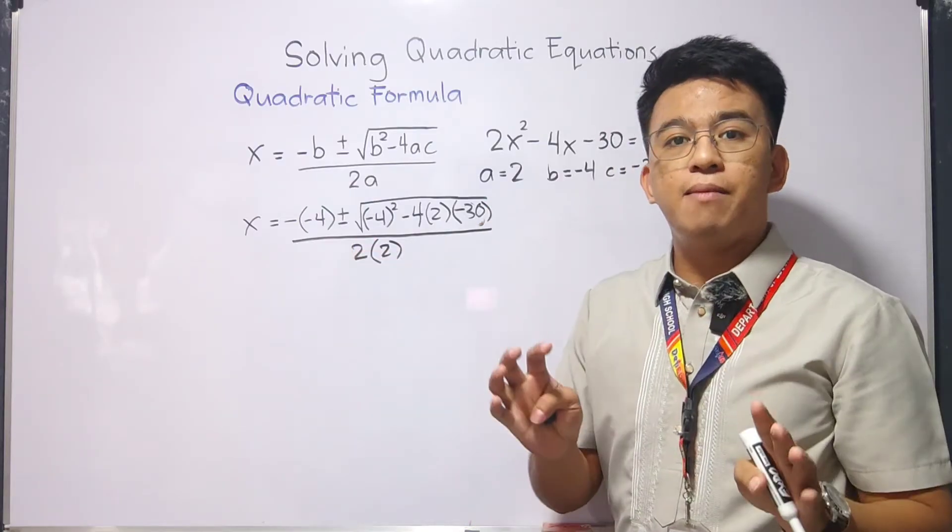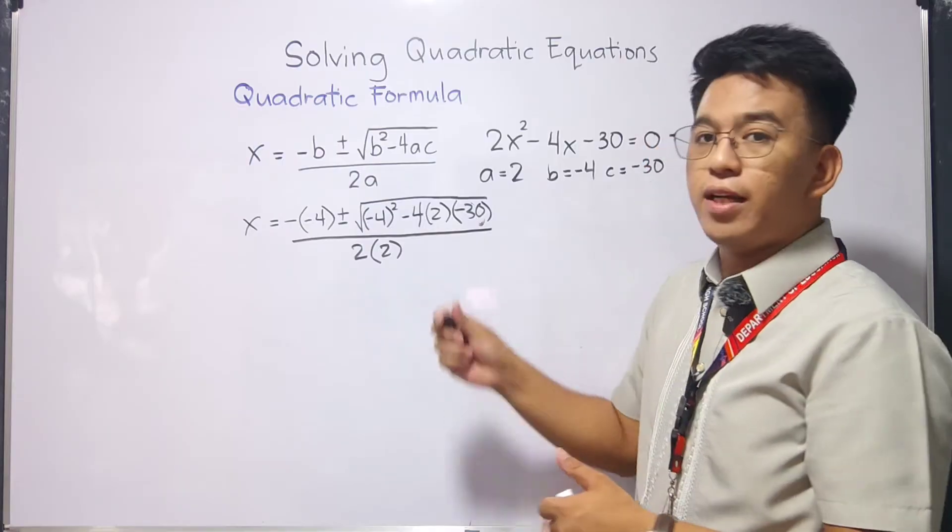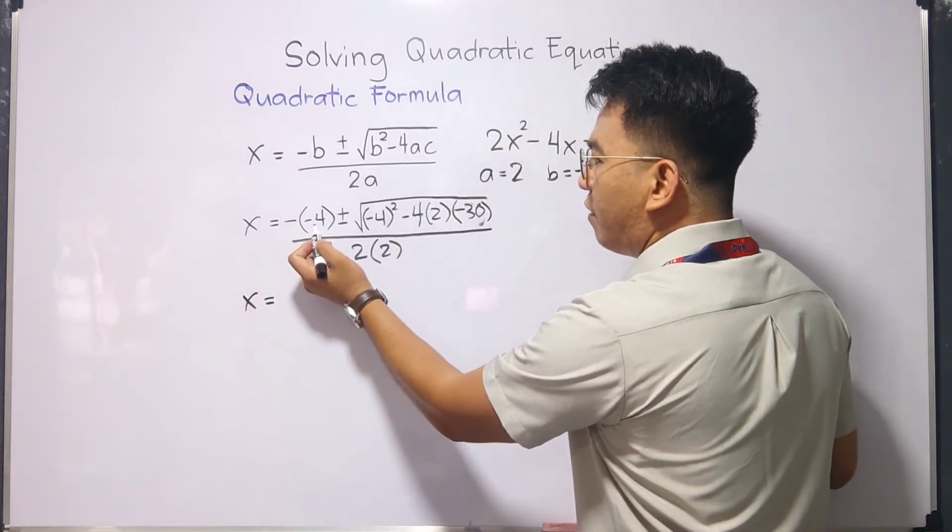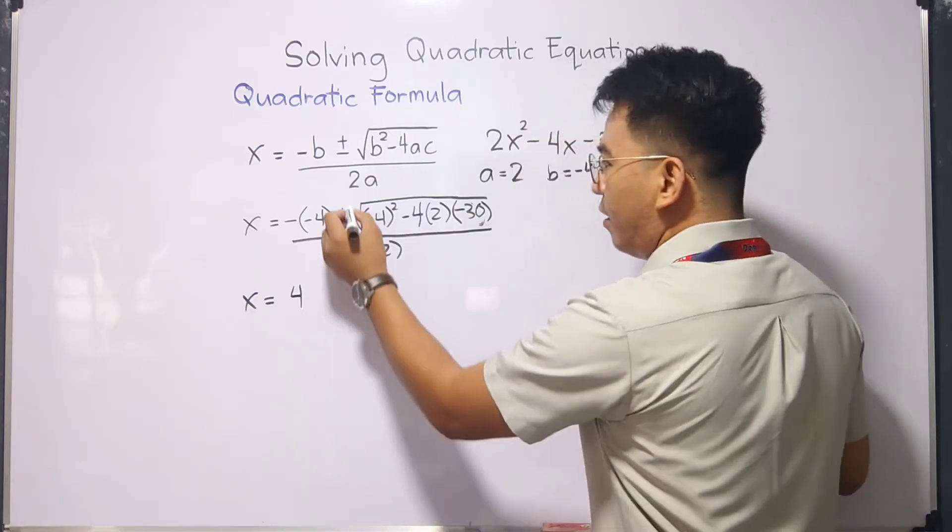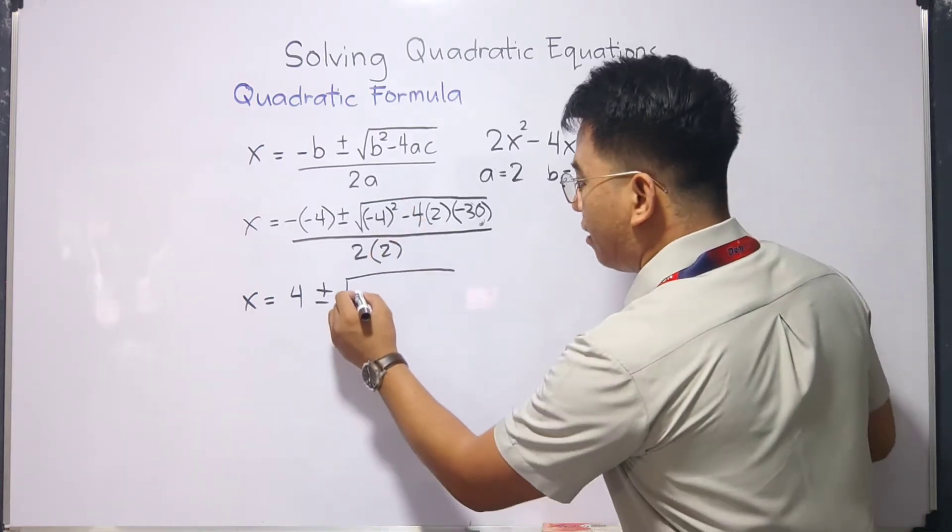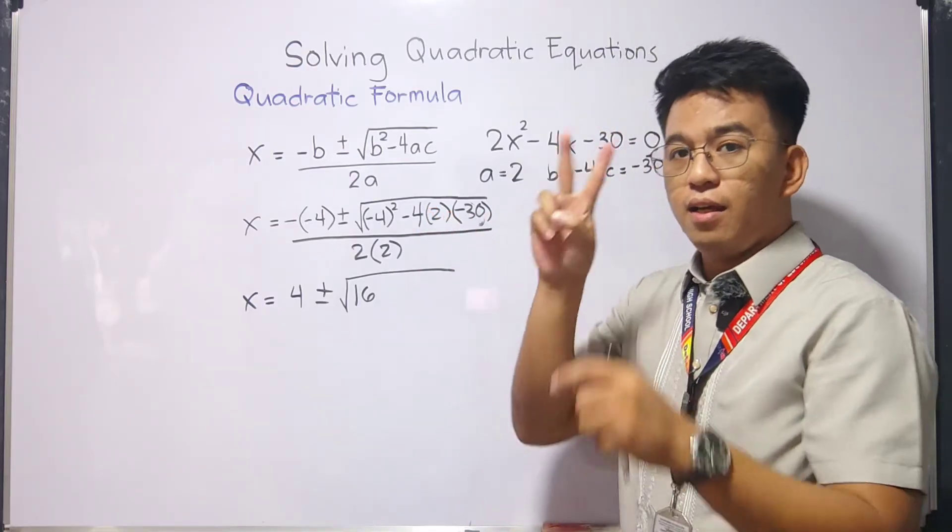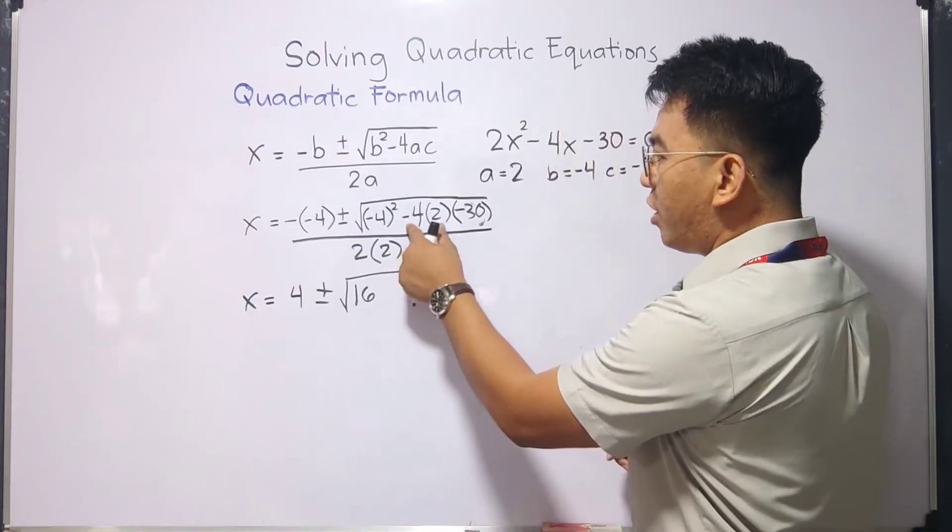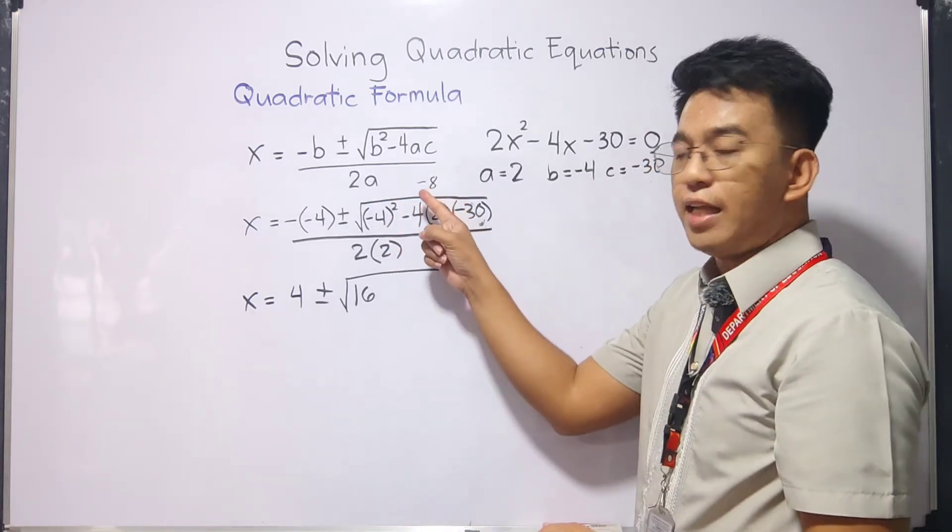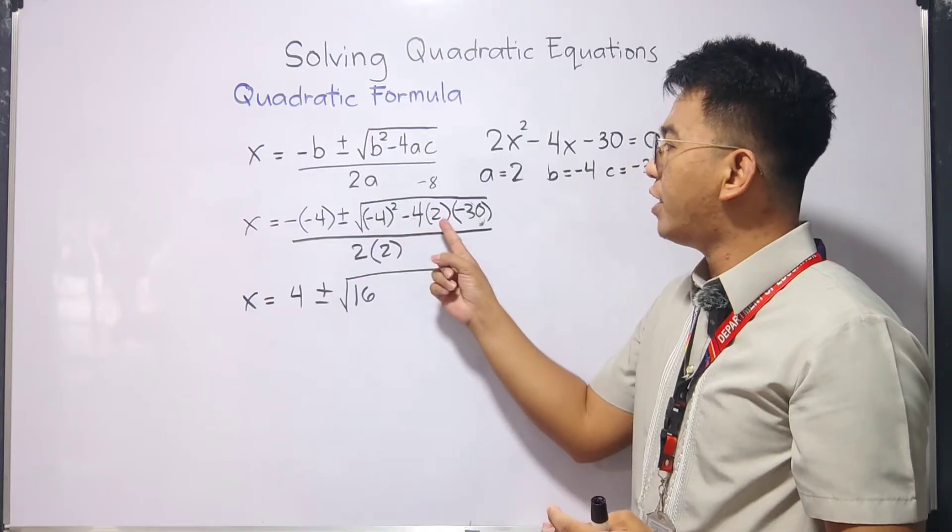Now, this will be the problem for students in grade 9, the part with the radical. So we'll take it step by step until we get the correct answer. In this case, you have your x is equal to negative times negative is positive. So it will become 4. Then you have your positive, negative. Let's simplify the radical part. Negative 4 squared is 16. Then, this one. Negative 4 times 2 times negative 30. By 2 first. You have negative 4 times 2. That is negative 8. So you have negative 8.